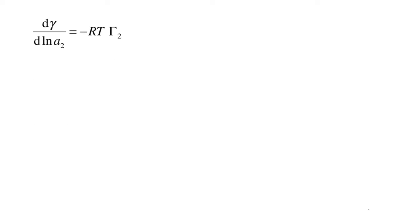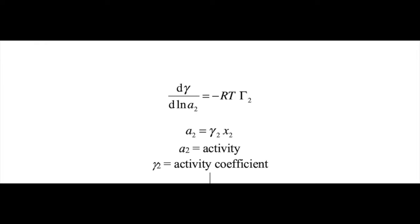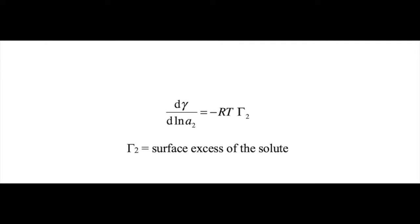We look at the lab manual and we're told that the derivative of the surface tension gamma with respect to the natural log of the activity of ethanol, A2, is equal to minus RT gamma 2. Gamma 2 is the surface excess of ethanol, and that's what we want to determine.